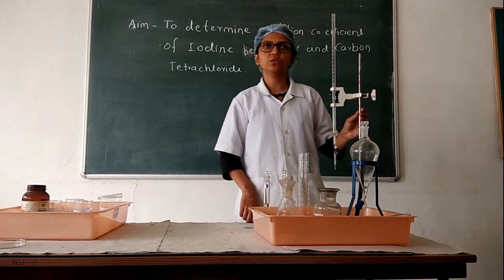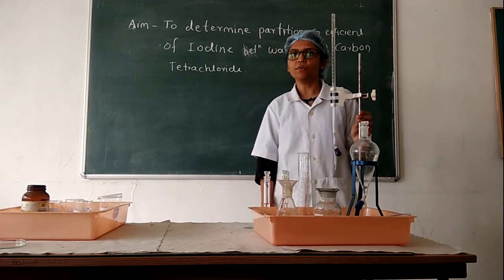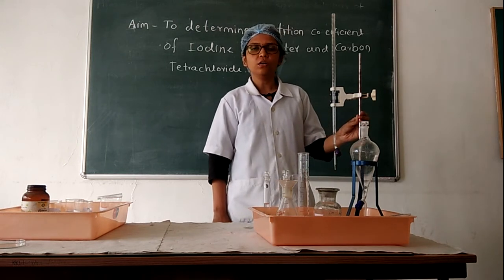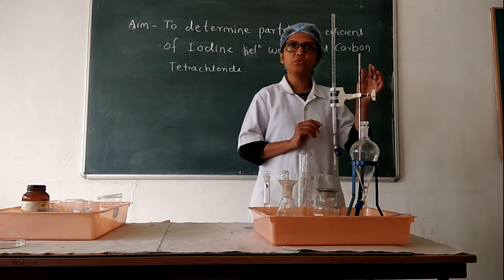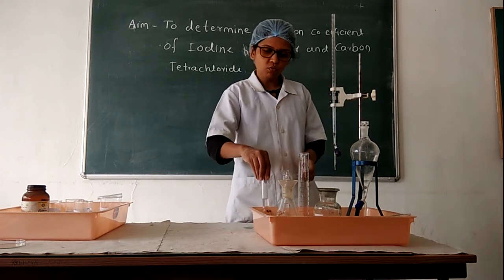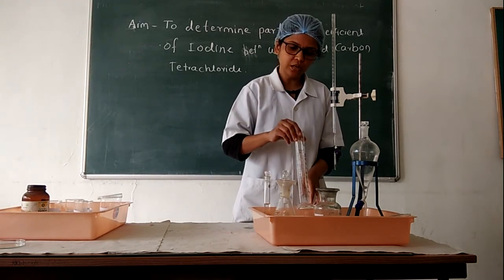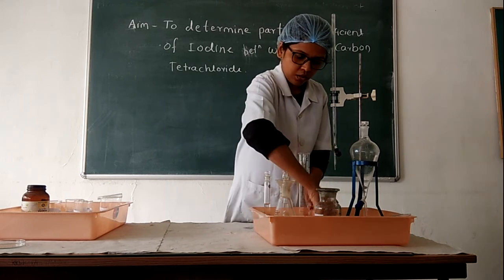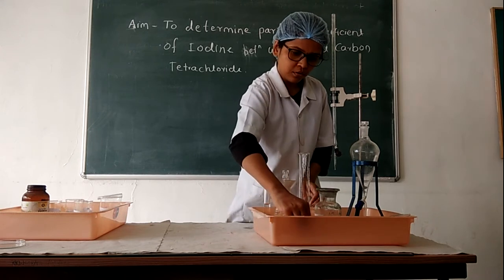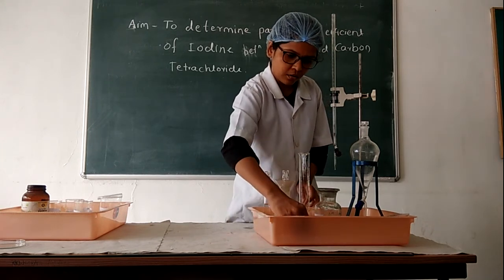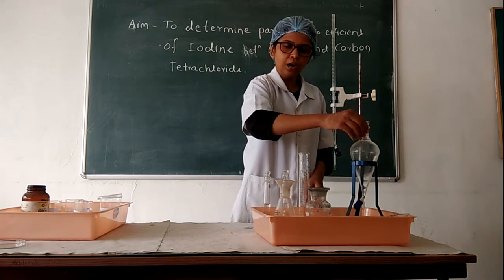Now we will see the actual demonstration of the practical for the determination of partition coefficient of iodine in water and carbon tetrachloride. The glassware required to perform the experiment includes: burette stand, burette, volumetric flask, iodine flask, measuring cylinder, beaker, glass rod, rubber bulb, pipette, reagent bottles, separating funnel, and tripod stand.